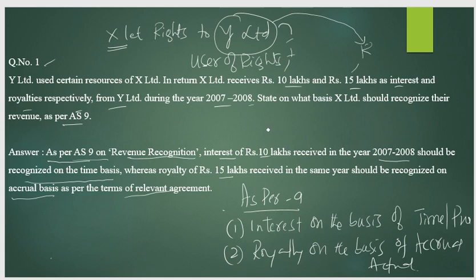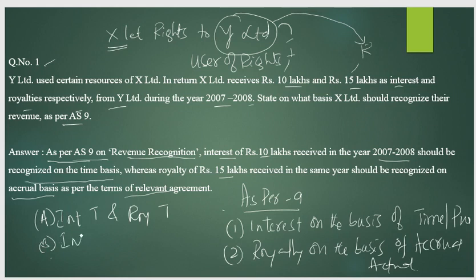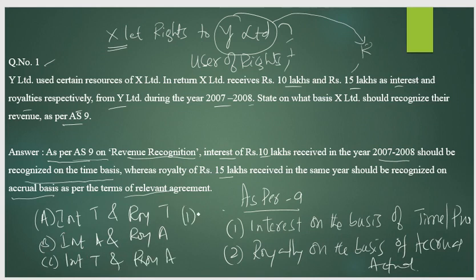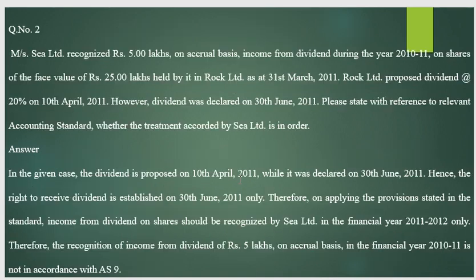In MCQ format, the options are: A — both interest and royalty on time basis; B — both on accrual basis; C — interest on time basis and royalty on accrual basis; D — none. The correct answer is option C.